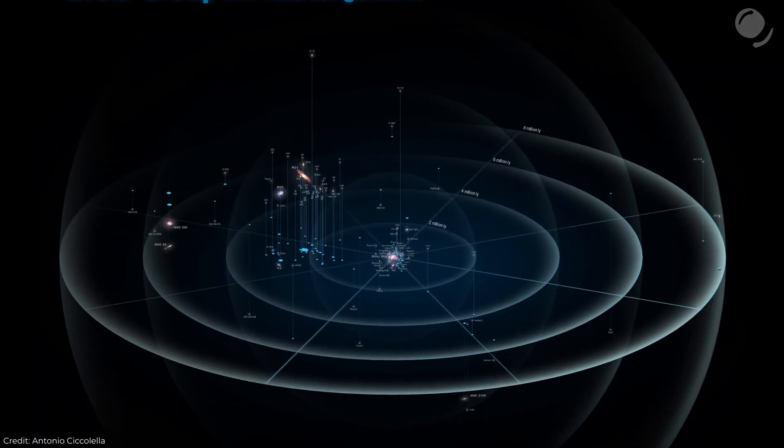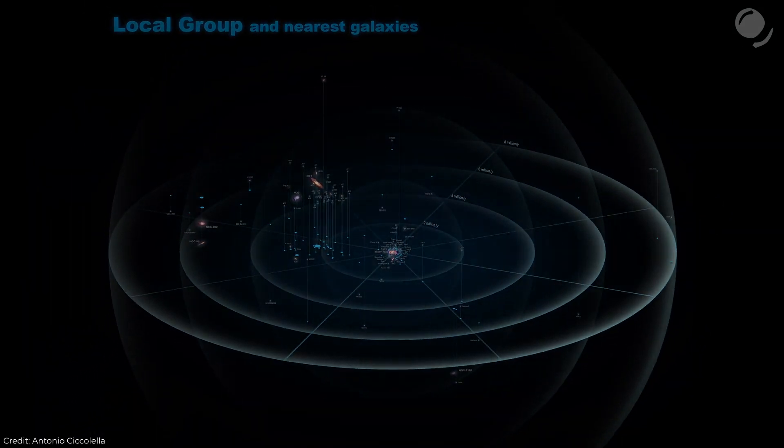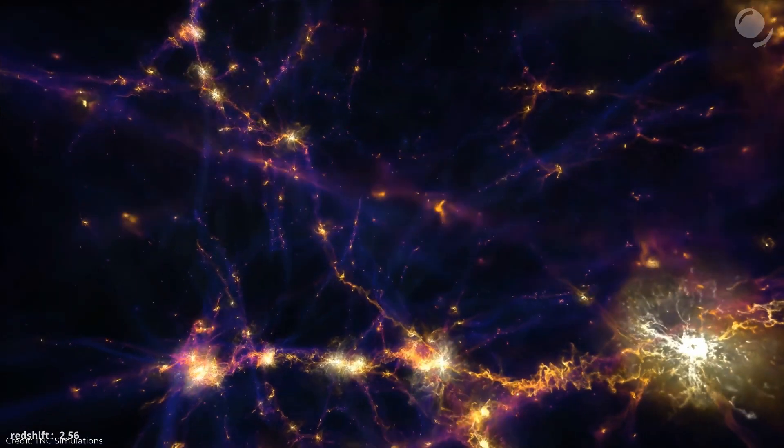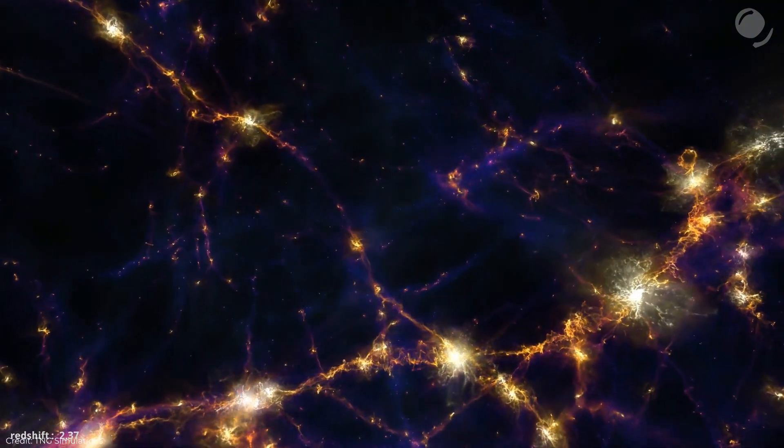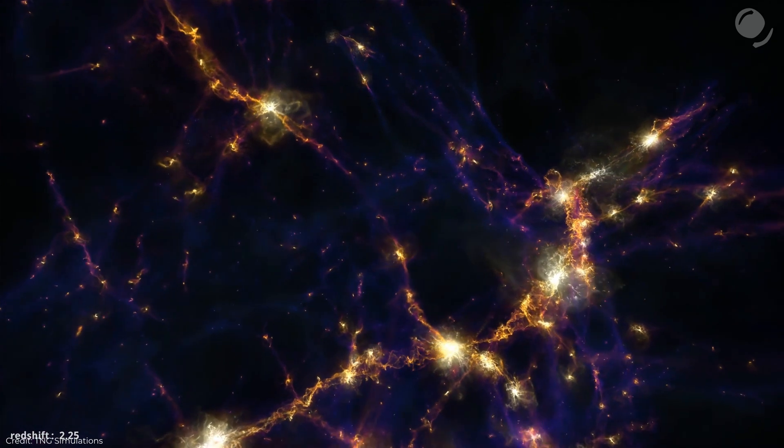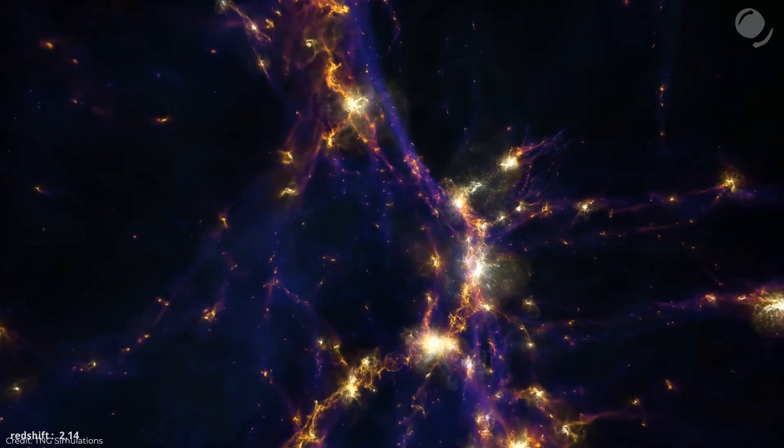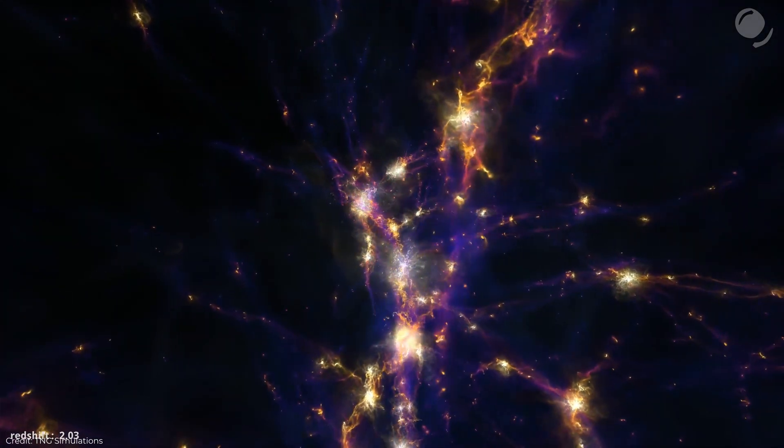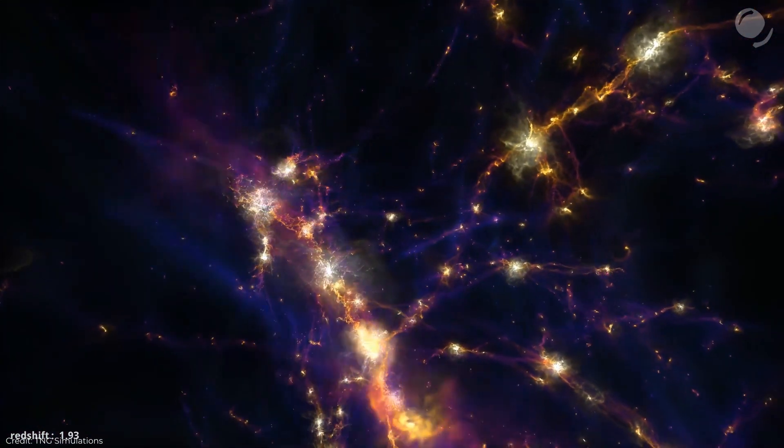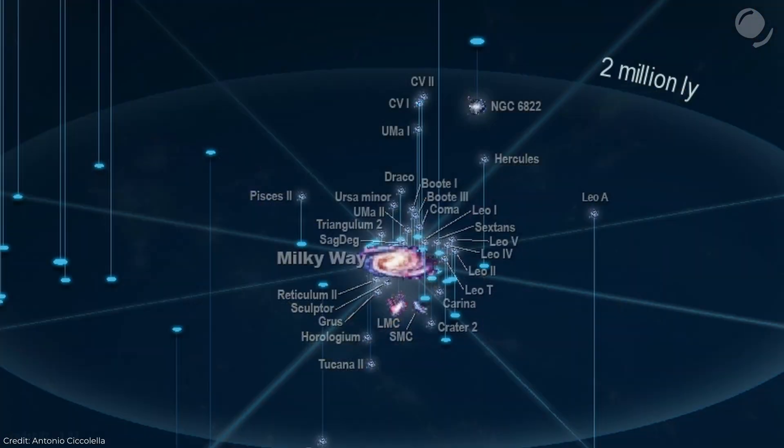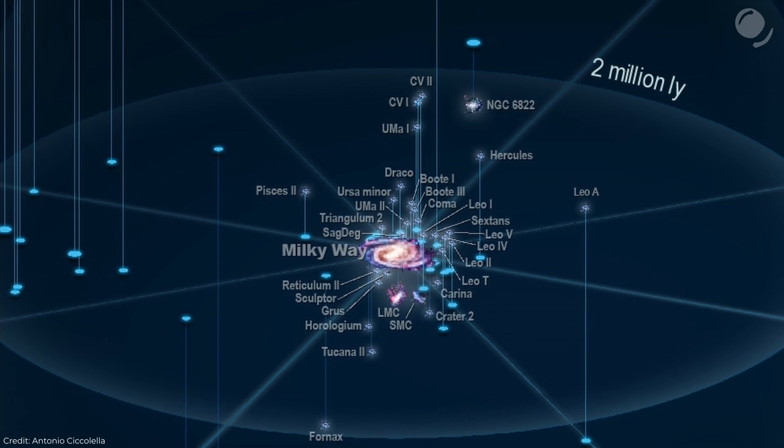The missing satellite problem is one of those major inconsistencies. In short, the thing is that cosmological simulations that, in other aspects, very well recreated the structure and evolution of the universe, predicted that a Milky Way-like galaxy should have hundreds or even thousands of dwarf galaxies. But in practice we observe tens of satellites at best.